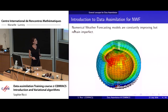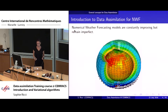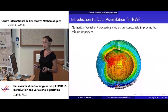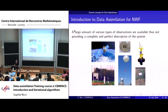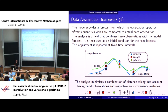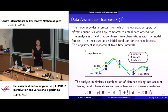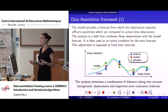For that, we have models — you see here a global grid model for the atmosphere. Those models are constantly improving, but they're not perfect, and it's not reasonable to just rely on those models to provide a forecast. So we use observations, and there are various types of observations for the atmosphere. They're available but they don't provide a complete nor perfect description of the atmospheric system. The idea is really to combine information from the model and from the observations to provide reliable weather, yielding an analysis that is a better estimate of the state of the system.